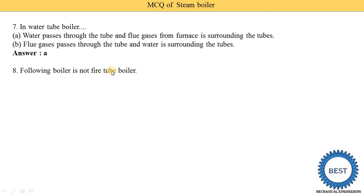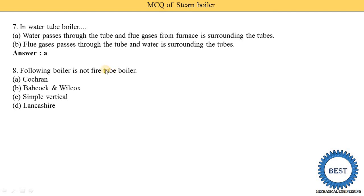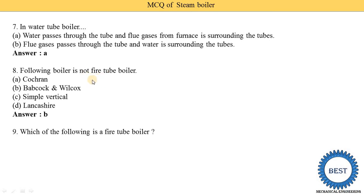Which of the following is not a fire tube boiler? The options are Cochrane boiler, Babcock and Wilcox boiler, simple vertical boiler, and Lancashire boiler. The answer is Babcock and Wilcox — it is a water tube boiler. All others — Cochrane, simple vertical, and Lancashire — are fire tube boilers.